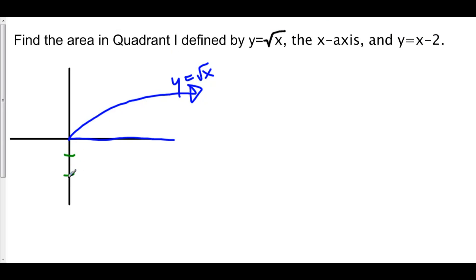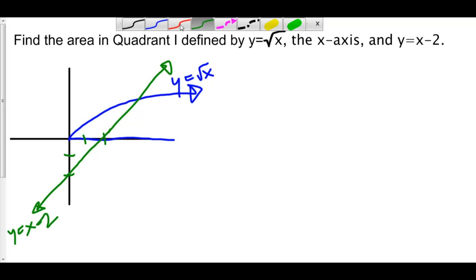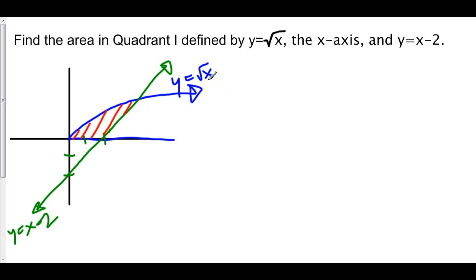I'll put that one in green. Our y-intercept is negative 2 and our slope is positive 1, so the graph of y equals x minus 2 looks something like this. We're looking at this area inside of quadrant one defined by these two lines and the x-axis. We have to split up this area, because if we were to take the integral of root x minus (x minus 2), we would also be including this triangle below the x-axis.